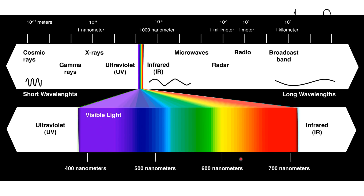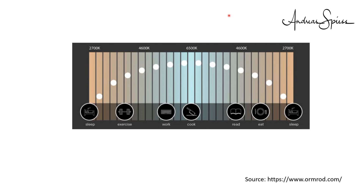Old light bulbs create warm, yellowish light, and fluorescent bulbs create cold white or neutral light, which contains much more blue color. The sun changes its color temperature — another name for the color of light — over time. In the morning and in the evening,